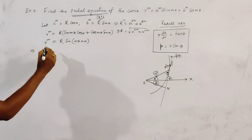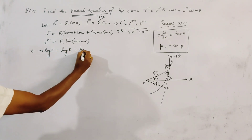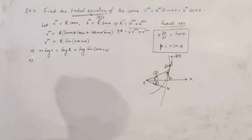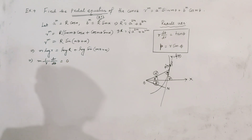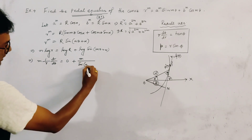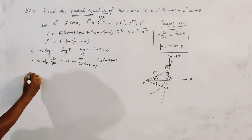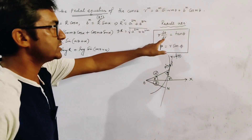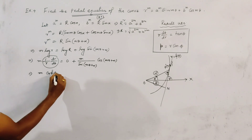Now, taking logarithm on both sides, we get m·log(r) = log(R) + log(sin(mθ + α)). Differentiating both sides with respect to θ, we get m·(1/r)·(dr/dθ) = 0 + m·cos(mθ + α)/sin(mθ + α). Using the first useful relation — since r·dθ/dr = tan(φ), so (1/r)·(dr/dθ) = cot(φ) — we write m·cot(φ) = m·cot(mθ + α).